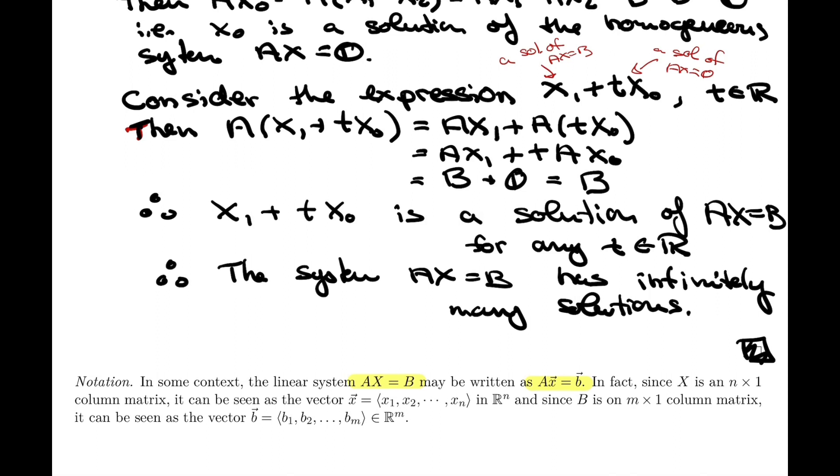The logic behind that is that the matrix X, I call it a matrix, but it's a column matrix, right? It's always n by one. And so we saw that column matrix can also be thought of as a vector, right? So you can think of it as the vector X rather than the matrix X. And same thing for B. B is a column matrix, an n by one. So you could think of it as a vector in Rm, right? Rm because it has m components, whereas X is in Rn because it has n components.